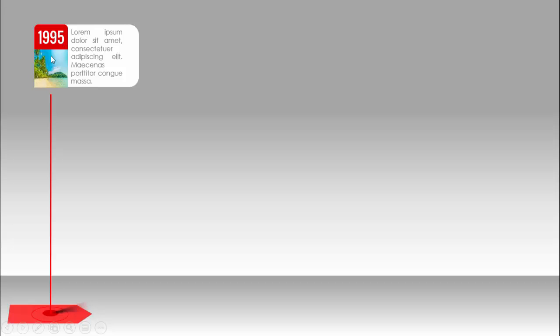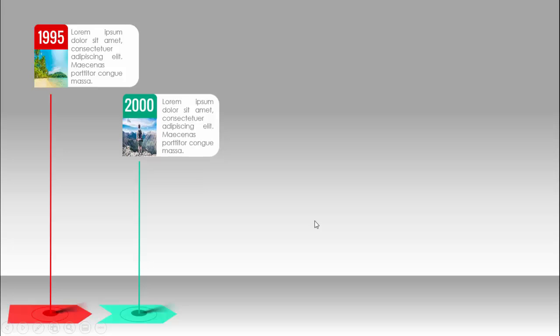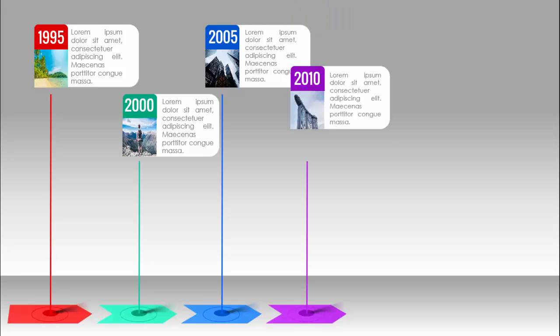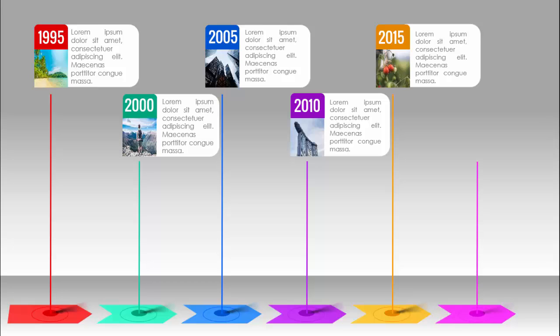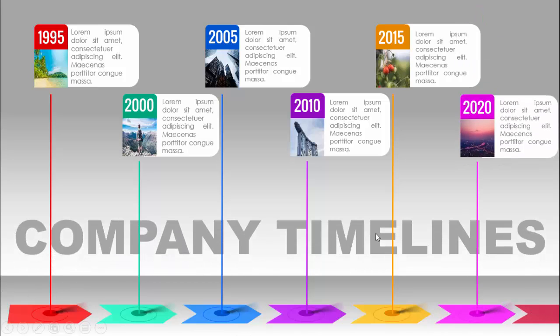In today's tutorial, I am going to show you how to create a six-step animated timeline slide in PowerPoint. When I click, it will show the first option with the year, an image you can replace with any of your own, and detailed text with a shadow effect at the bottom. On the next click, it shows the second timeline for year 2000, then 2005, 2010, 2015, and 2020. You can add your title here.